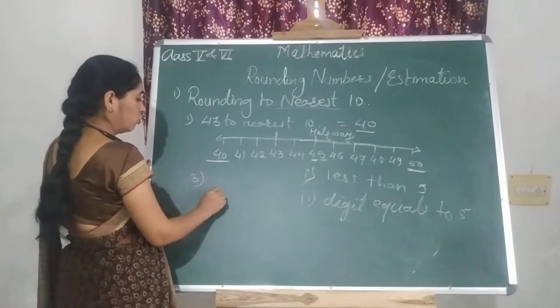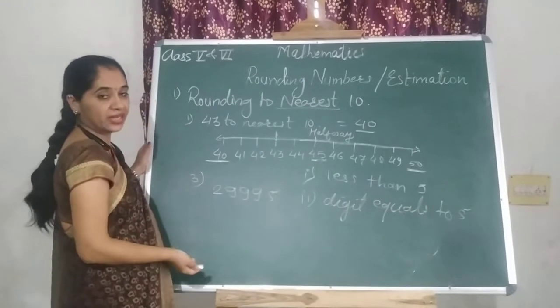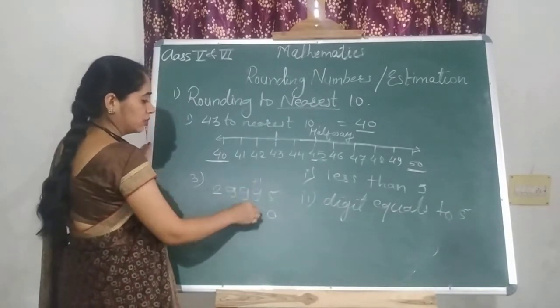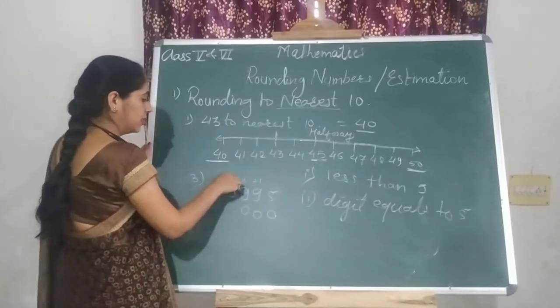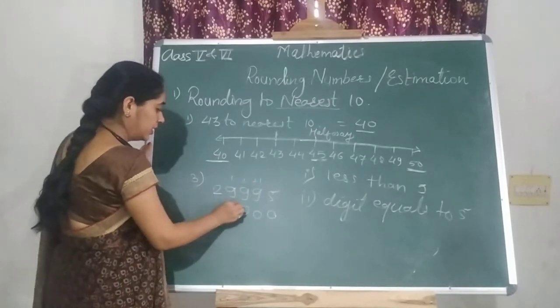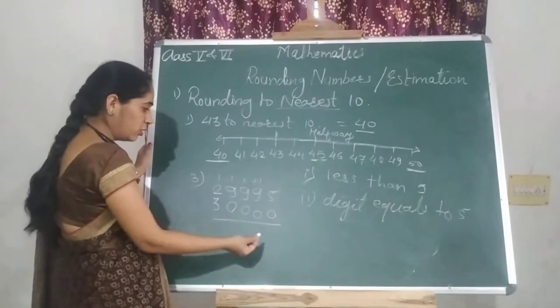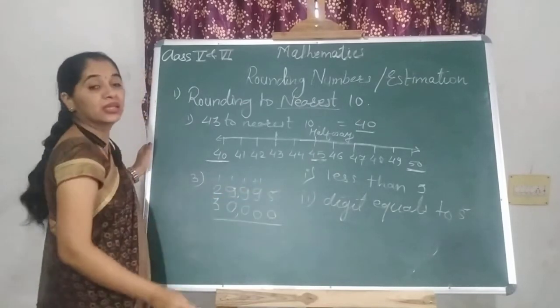Suppose you have to round off 2,995 to the nearest 10. Then what will you do? 5 replaced by 0 plus 1. 9 plus 1 is 10, carry 1. 9 plus 1 is 10, carry 1. 9 plus 1 is 10, carry 1. And 2 plus 1 is 3. So nearest 10 of 2,995 is 3,000.